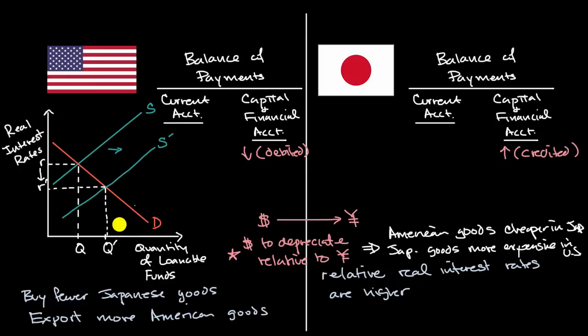And so what's going to happen on our current account? Well, if you're exporting more, that means your current account goes up. It is going to be credited. It is going to be credited. And then the opposite is going to happen to Japan. Relative to the U.S., it's going to export less and import more. So its current account is going to be debited.